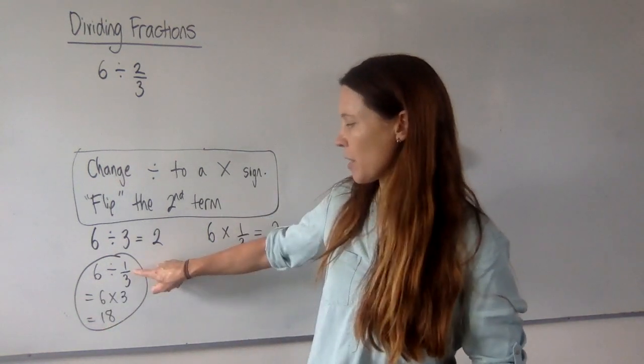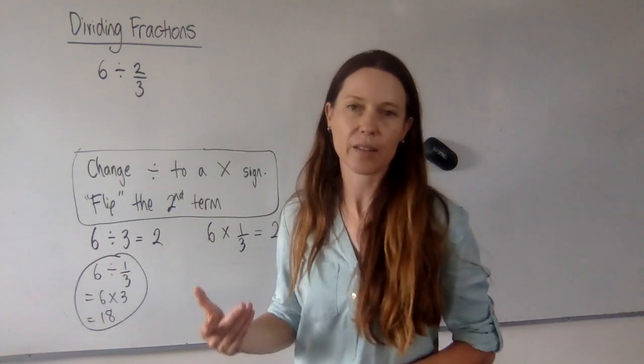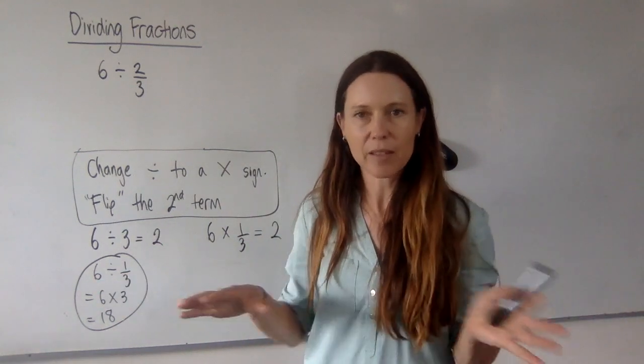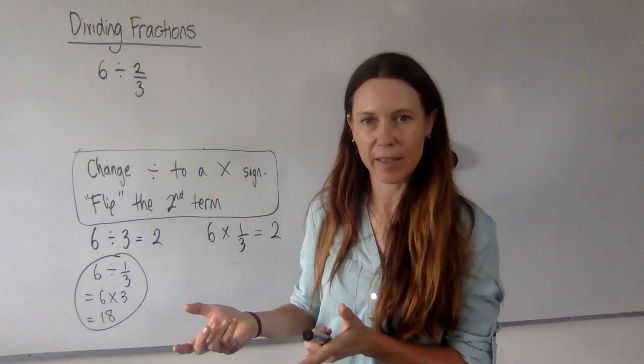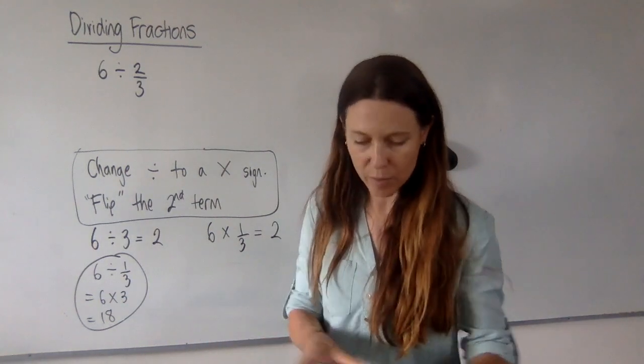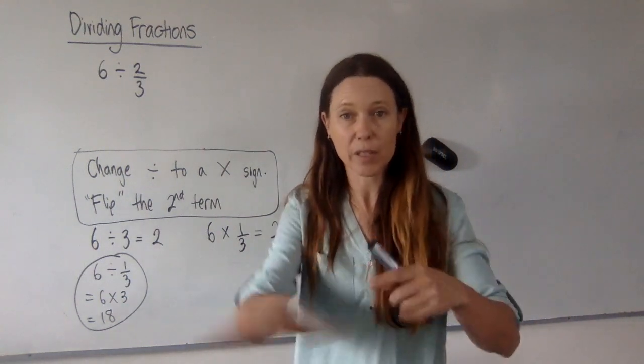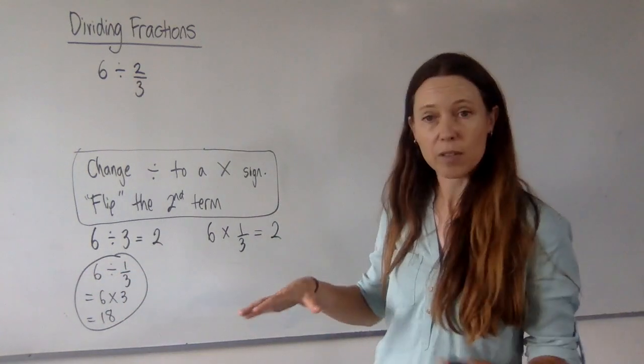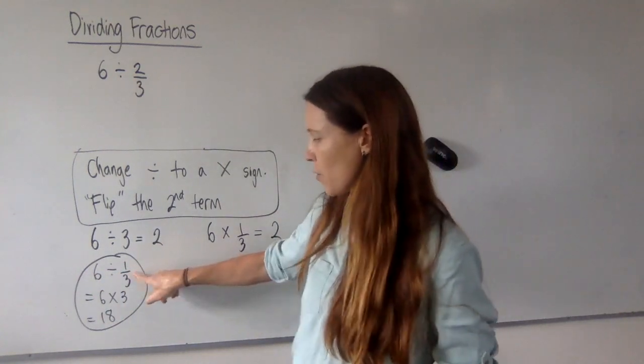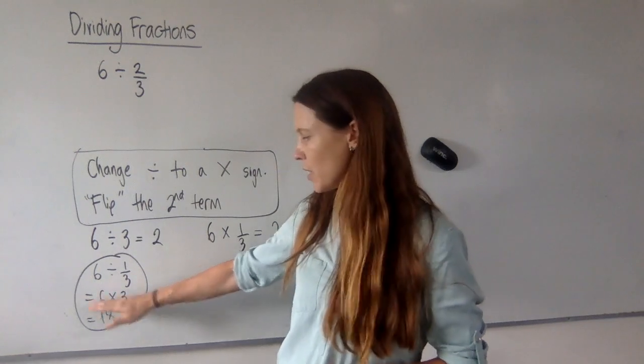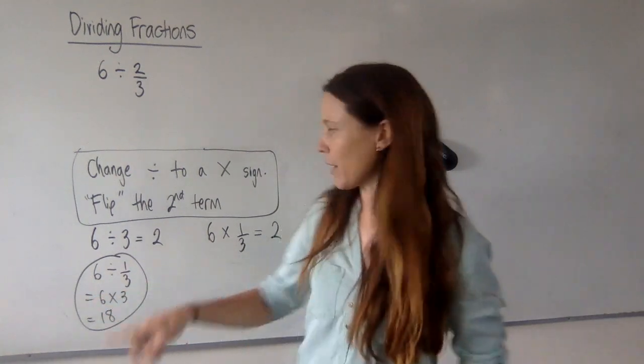But let's just think through what we would have done here if we didn't know this workaround. We would have said, how many thirds are there in 6? Picture 6 pizzas. How many thirds of a pizza are there? Well, there's 3 thirds in this pizza. Another 3 here. Another 3 here. And if you've got 6 pizzas, clearly you've got 6 times 3. So that sort of thinking can get us the answer, even if we didn't know to just automatically times and flip.